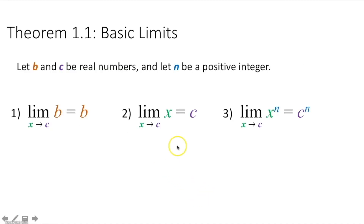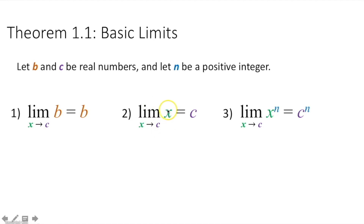There are three basic limits in Theorem 1.1. Let b and c be real numbers and let n be a positive integer. The limit as x approaches c of b, where b is just a constant, equals that constant — there's nothing to plug c into. The limit as x approaches c of x equals c: just take c, plug it in for x, and you get your limit — straight substitution. Same thing for the limit as x approaches c of x to some power: plug c in for x and you get your limit.